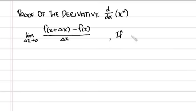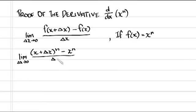If we replace f of x in this expression with f of x equals x to the power n, we get this equal to the limit as delta x approaches 0 of x plus delta x to the power n minus x to the power n over delta x, just substituting x to the power n for f of x in our original expression.